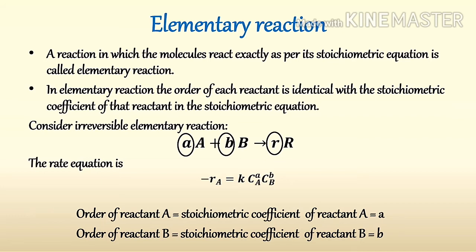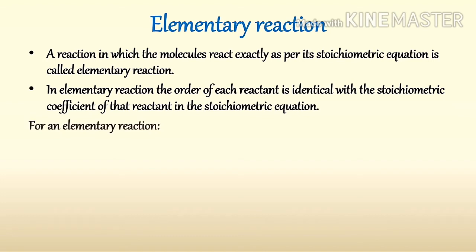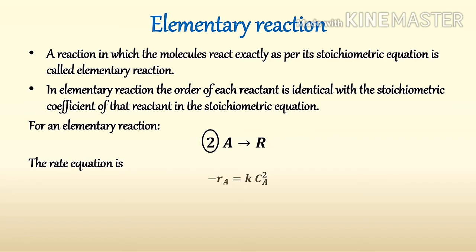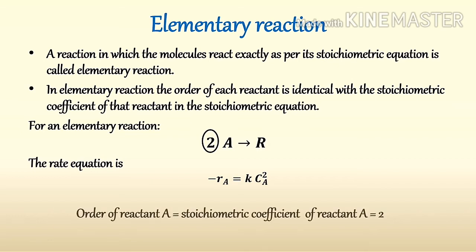Now consider another elementary reaction: 2A → R. The rate equation for this elementary reaction is -rA = k · CA². Since this reaction is elementary, the order of reactant A equals the stoichiometric coefficient of reactant A, which is 2.